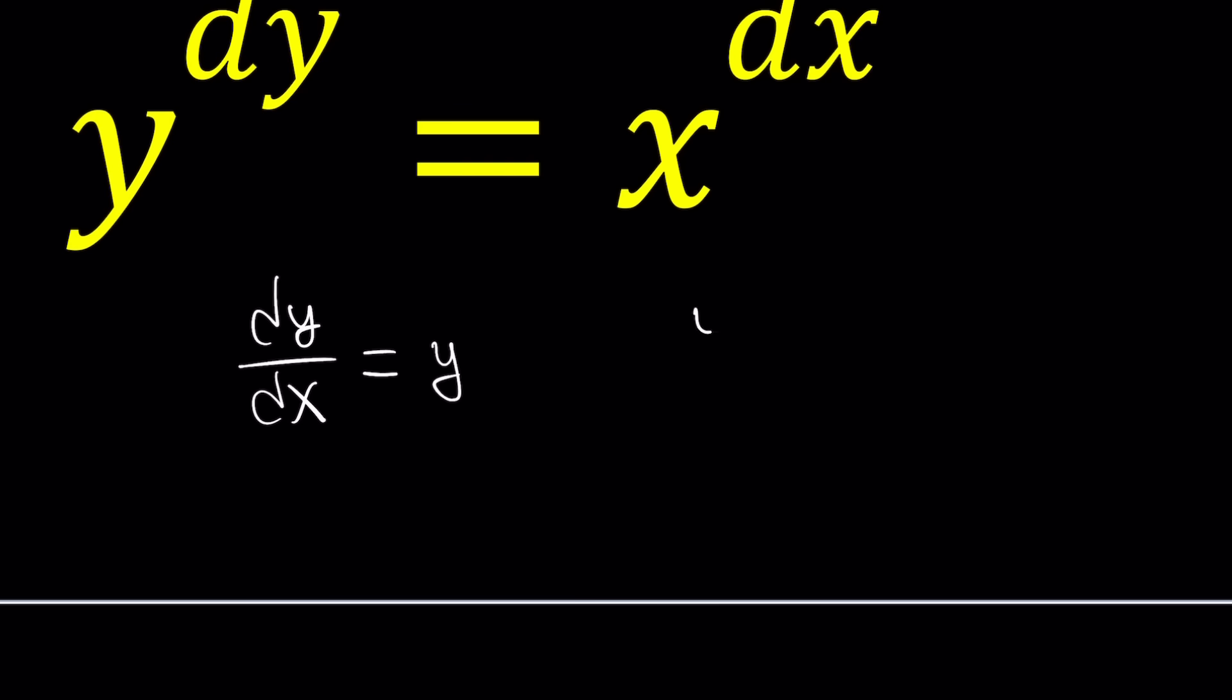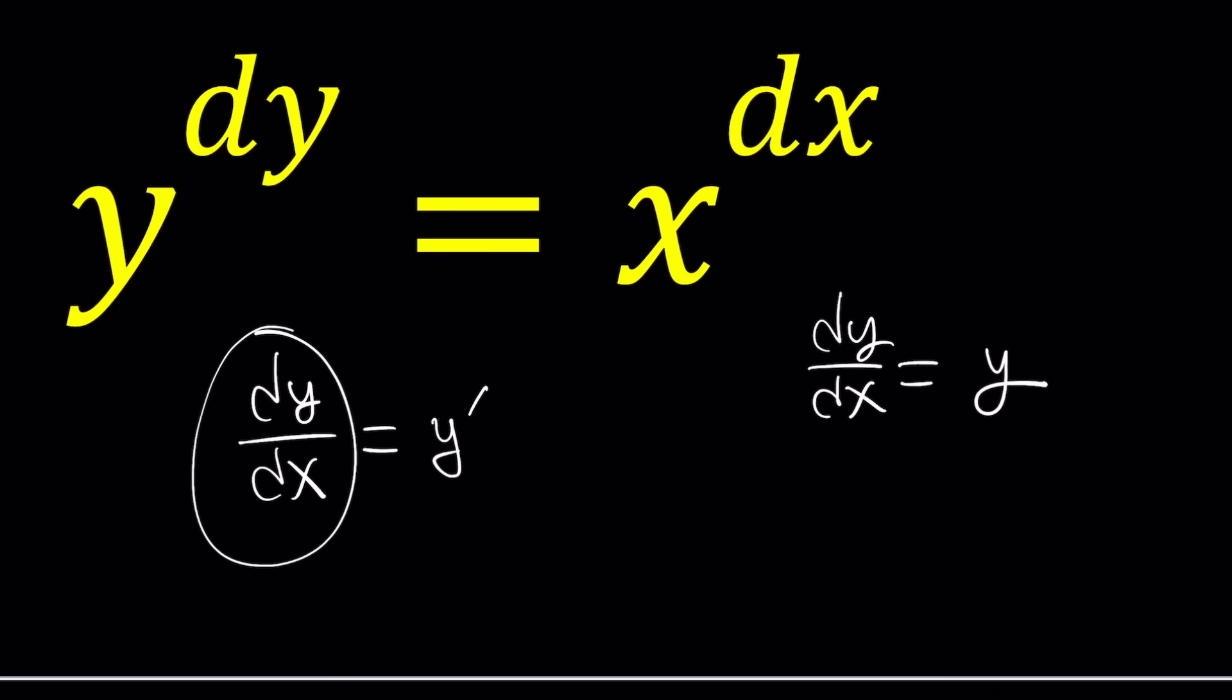If they told us y to the power y prime maybe that would be a little better. But still it's problematic because we have the derivative in the exponent. You don't want that. You want the derivative isolated. By the way this is not an identity. If I write dy/dx equals y then that just becomes another differential equation. So here's what I'm going to do.